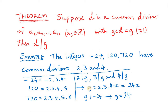So that means g must have factors 2, 3, and 4. We can write g as 2 times 3 times 4 times some unknown integer x. Now, g divides the 3 integers of course, so in particular it must divide minus 24. So 24x must divide minus 24, which means that g must equal 24.